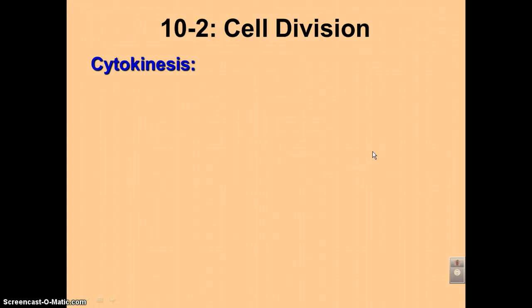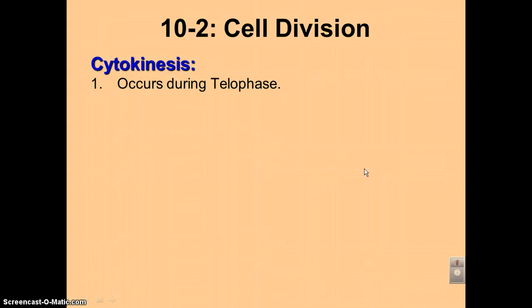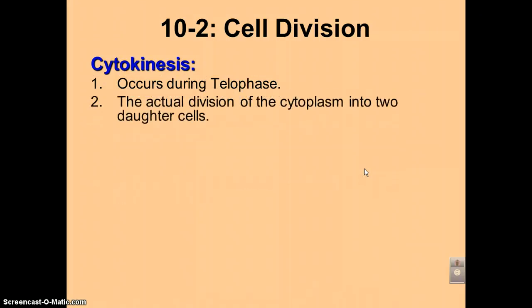In podcast number seven we're going to deal with cytokinesis, going over it in both animal cells and plant cells. First of all, what is cytokinesis? It will occur during telophase, although occasionally it can start towards the end of anaphase. It's defined as the actual division of the cytoplasm into two daughter cells — this is when the cell itself will split so that you have two complete daughter cells.